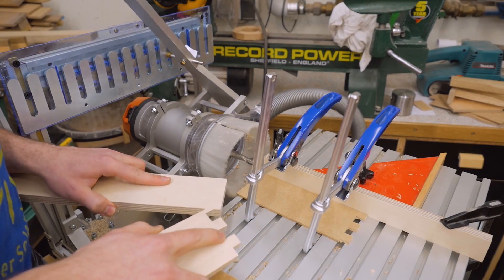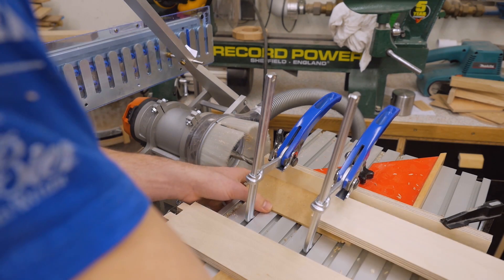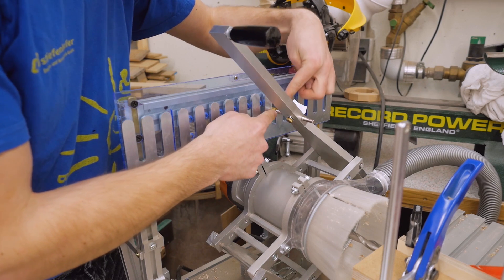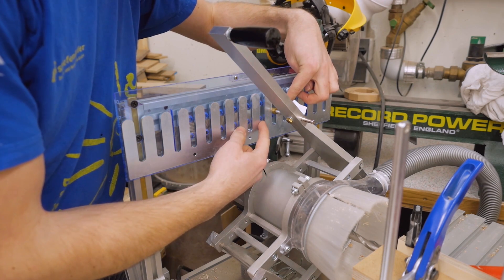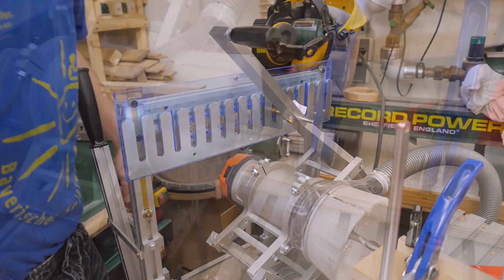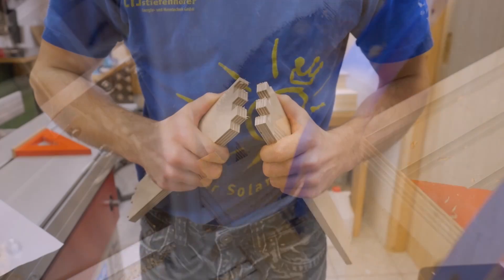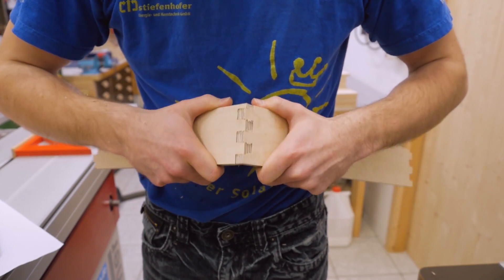To cut the matching pieces the setup doesn't change at all. I just had to make a clean edge on my sacrificial pieces again. The only difference is that I now cut with the follower in the slots that I skipped previously and it will now skip the ones that I used for cutting before. So now let's check the fit. Perfect.